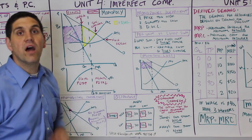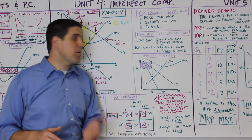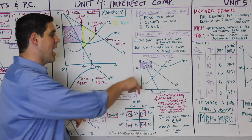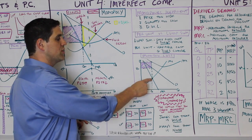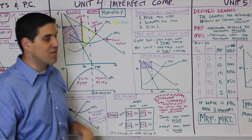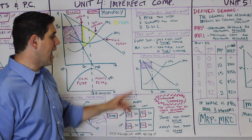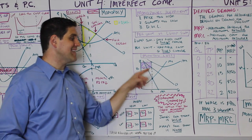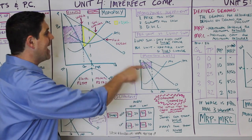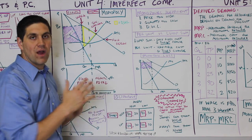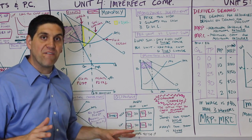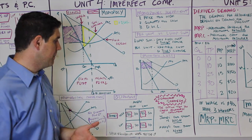Another graph you may need to draw is a monopoly with a loss. It's the same graph — demand, marginal revenue, produce at MR equals MC, same price — the only difference is the ATC is above the price, creating a loss. Keep in mind, deadweight loss is still there exactly the same regardless of profit. Deadweight loss has nothing to do with profit — it has everything to do with efficiency.